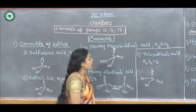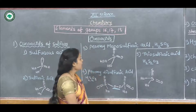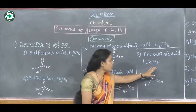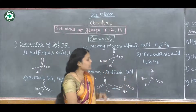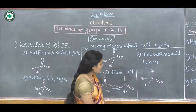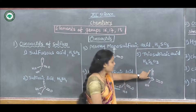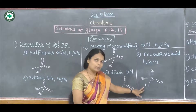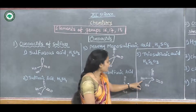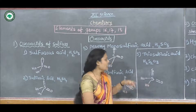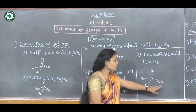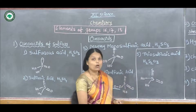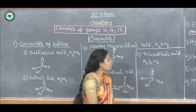The last oxoacid of sulfur is thiosulfuric acid. Its formula is H₂S₂O₃. There are 2 sulfur atoms, 3 oxygen atoms, and 2 hydrogen atoms. In the structure, there is a sulfur-sulfur bond, a sulfur double bond to oxygen, and two single OH bonds attached to the sulfur. This is thiosulfuric acid.